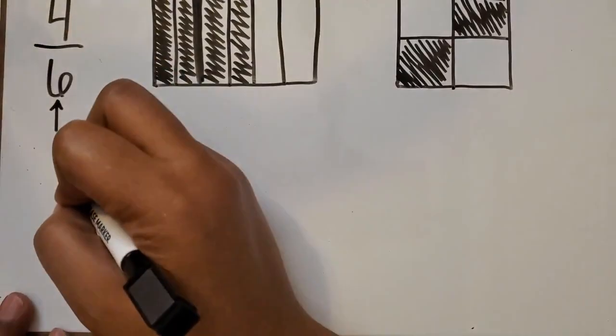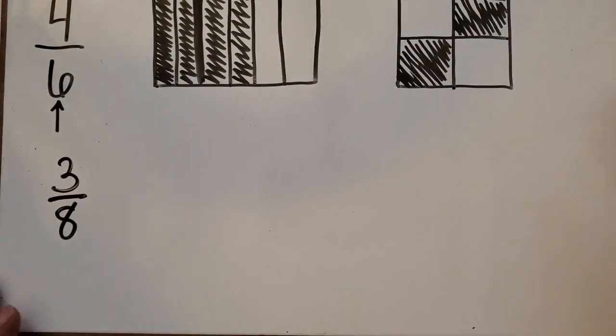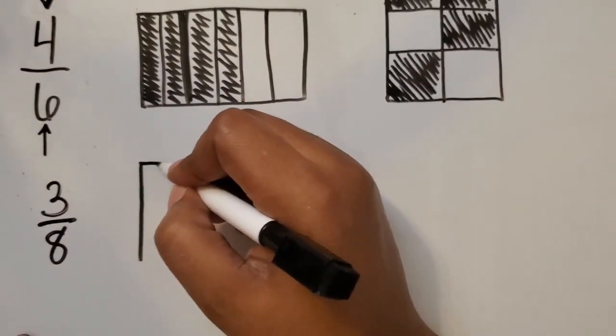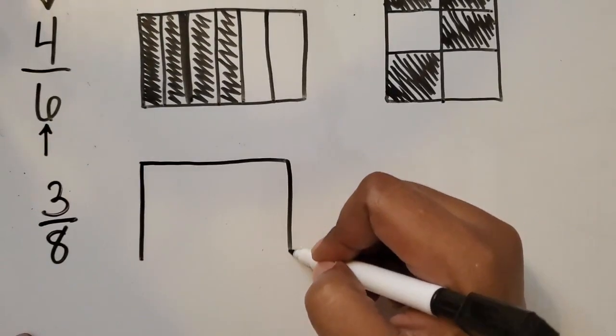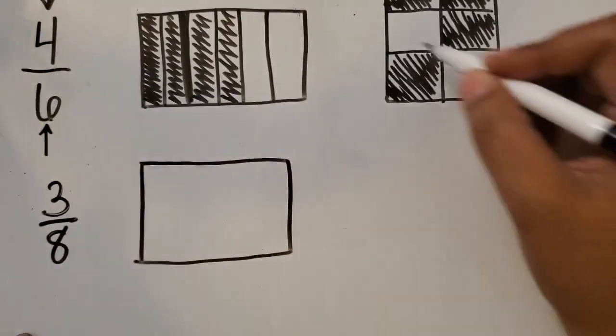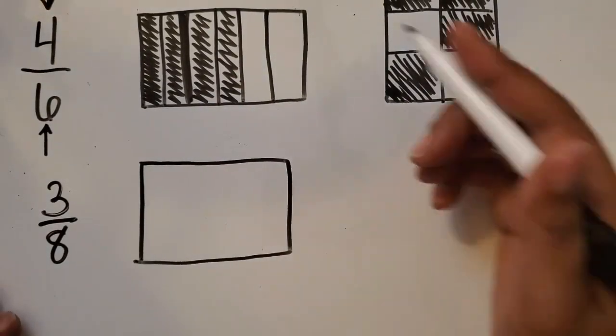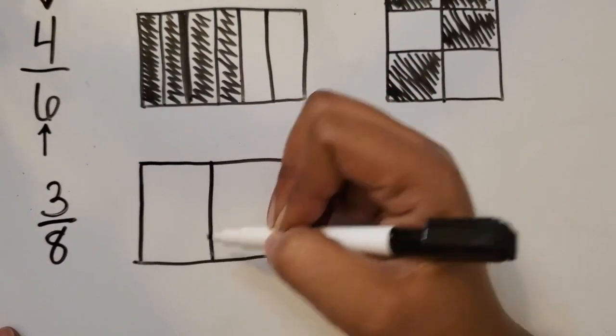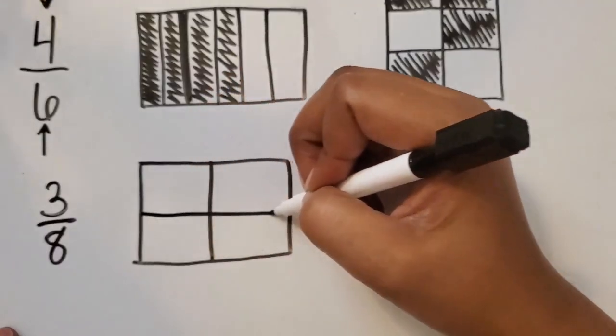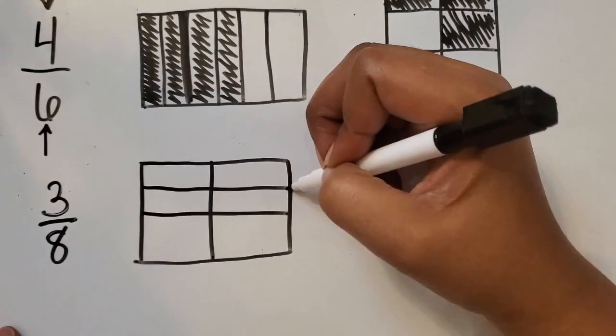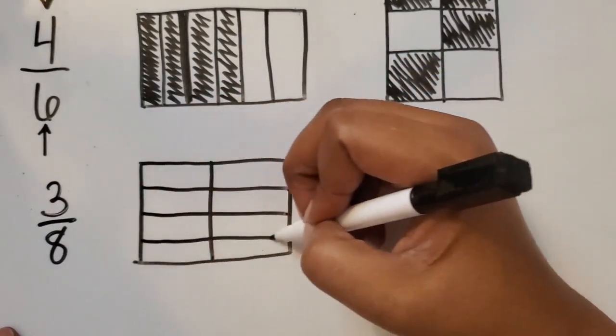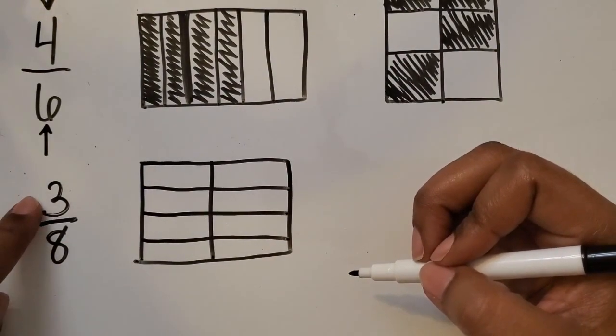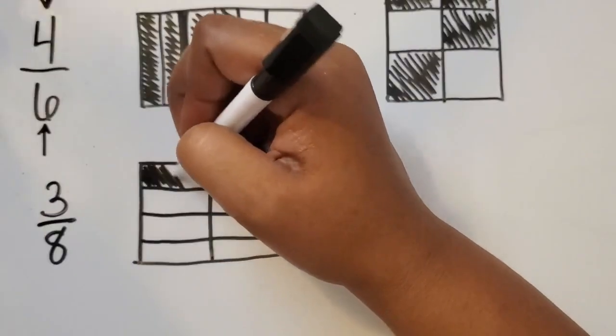We have 3/8. How can we represent that in a rectangular area model? So I'm going to draw another whole, and my wholes are different sizes in each example. So for this whole, we have 8 total parts, 8 equal total parts, and we need to shade in 3 to represent 3/8.